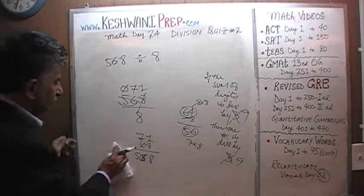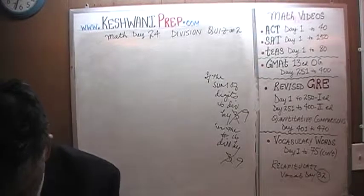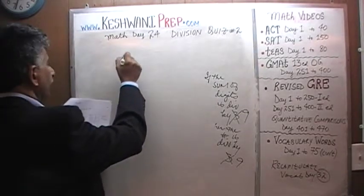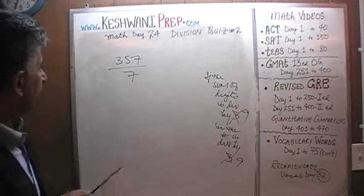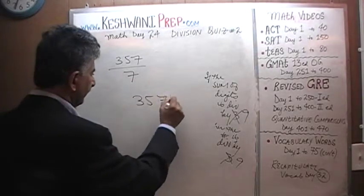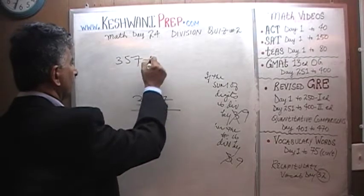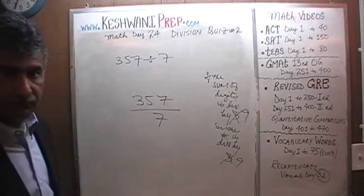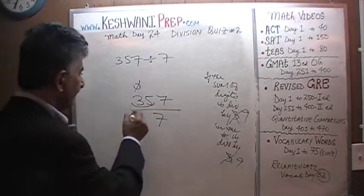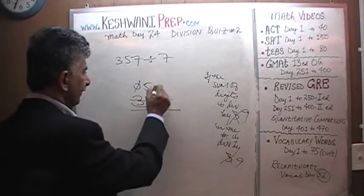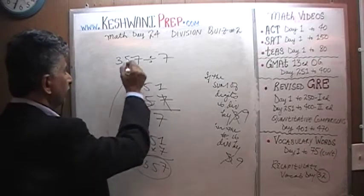Let's do one more. 357 divided by 7. How many 7s does 3 have? 3 has no 7s. That 3 goes and joins the 5, becomes 35. How many 7s does 35 have? 35 has 5 sevens. And then how many 7s does 7 have? 7 has 1 seven. Again, 51 times 7 is going to give us 357 that we started out with.